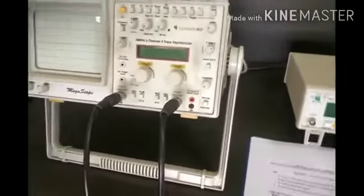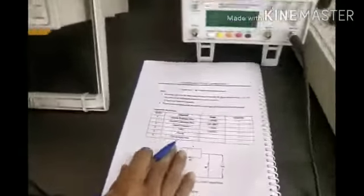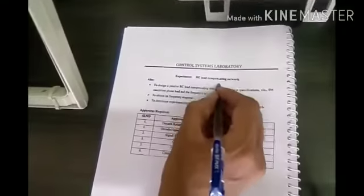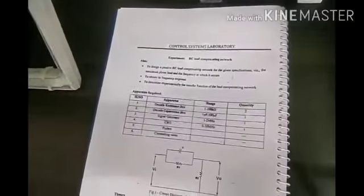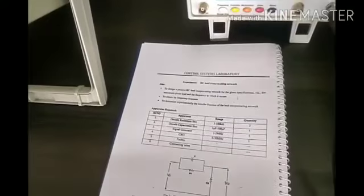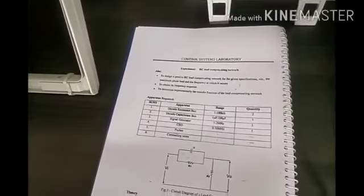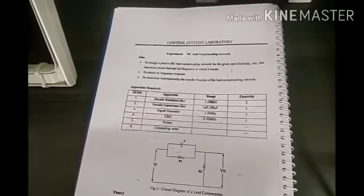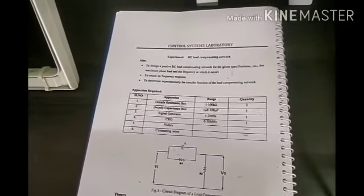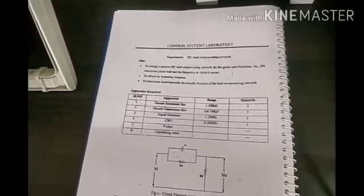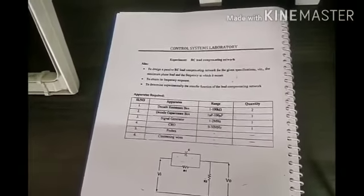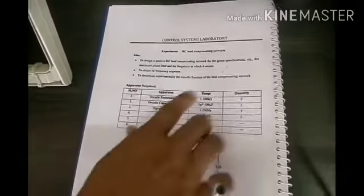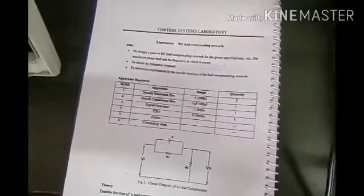The meaning of a compensating network is that compensating networks are used to provide certain adjustments to overcome certain deficiencies in a circuit. There may be certain phase lead or phase lag, and in order to provide a certain lead or lag from the current value to the expected value — to make certain adjustments — we make use of these compensating networks. This is the introduction to the RC lead compensating network.